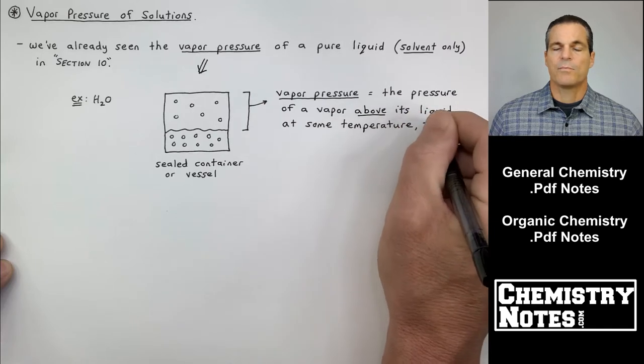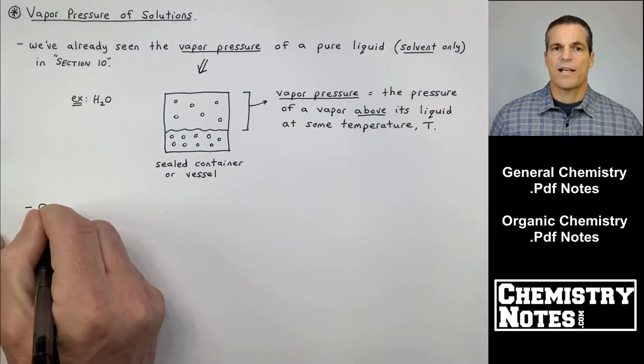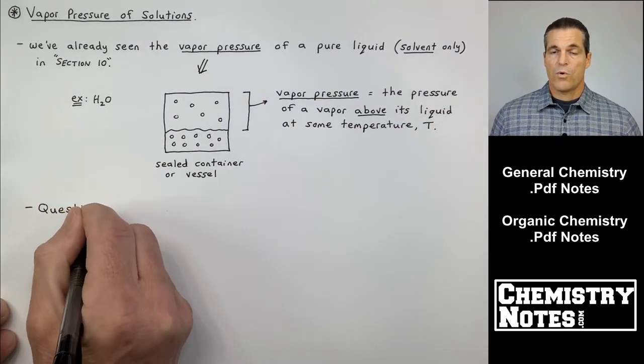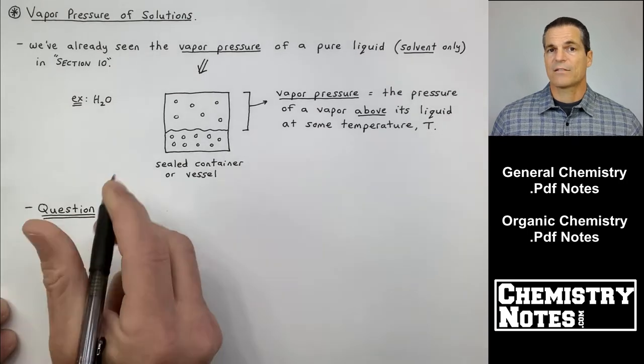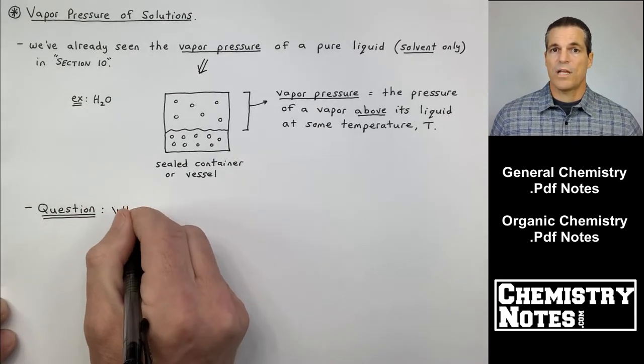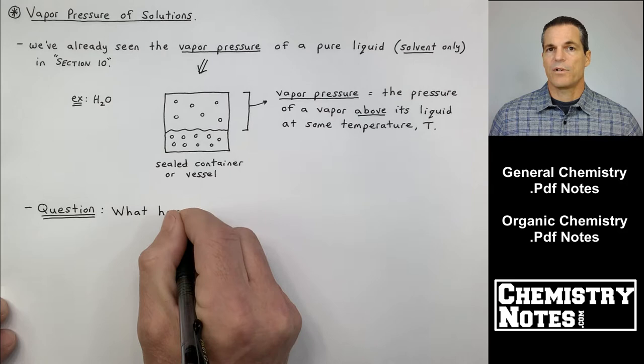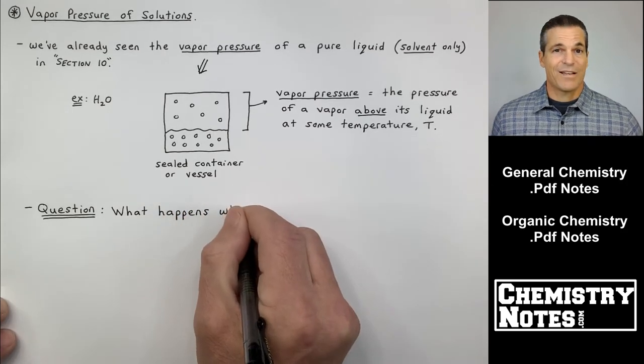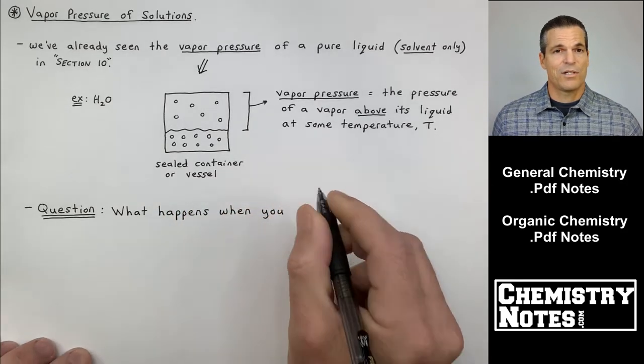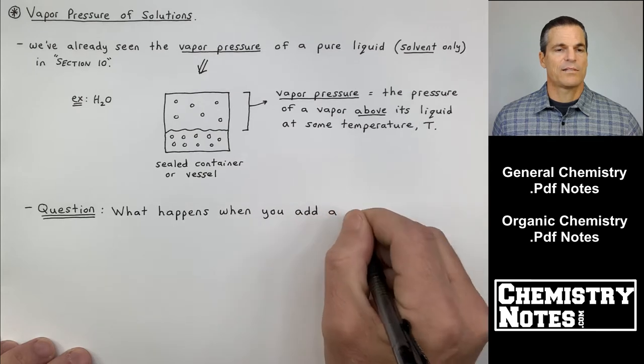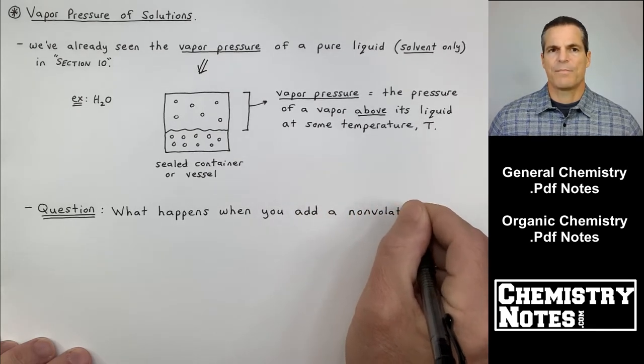So vapor pressure is the pressure of a vapor above its liquid at some temperature T. Now the temperature is important to know because as we learned in the last video one of the three factors affecting solubility was temperature. And if we increase the temperature of a gas solution, the gas solute will be less soluble. So it's just important to know the temperature.